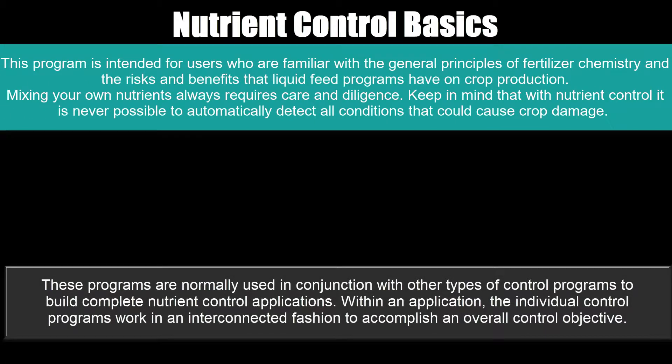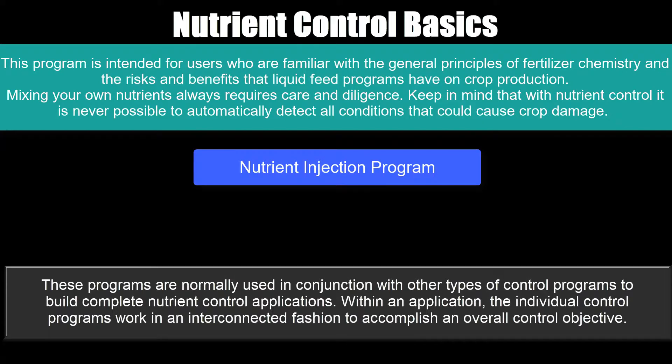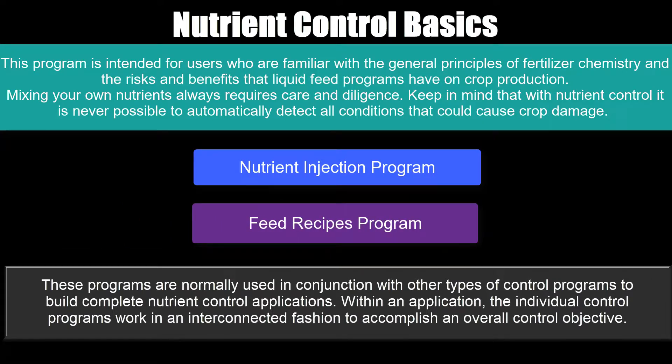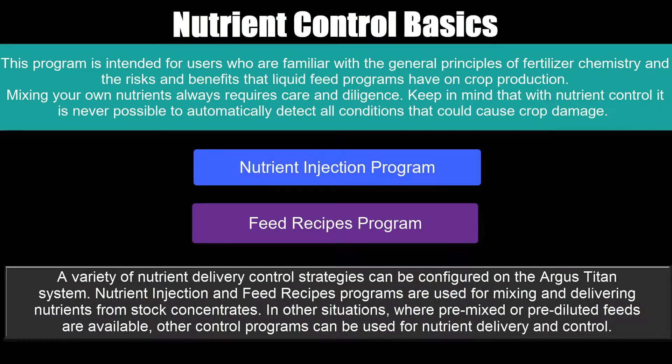This section outlines nutrient control basics and a nutrient control program overview. There are two main nutrient control programs: the nutrient injection program and the feed recipes program. These programs are normally used in conjunction with other types of control programs to build complete nutrient control applications. Within an application, the individual control programs work in an interconnected fashion to accomplish an overall control objective. A variety of nutrient delivery control strategies can be configured on the Argus Titan system. Where pre-mixed or pre-diluted feeds are available, other control programs can be used for nutrient delivery and control.